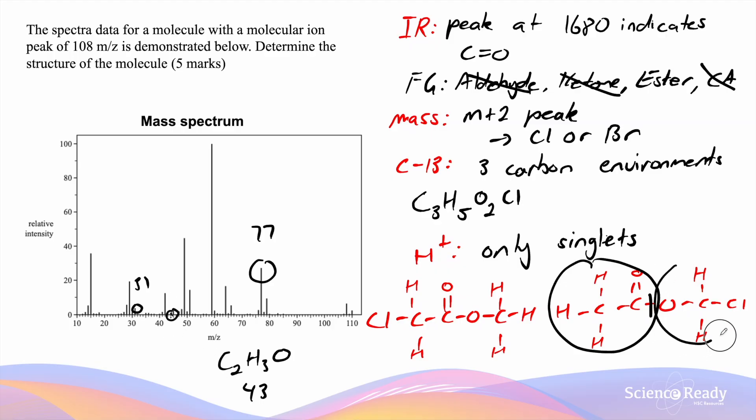The other fragment is CH2OCl. CH2OCl has a molar mass of 65. This signal is also pretty much non-existent on the mass spectrum. Given this evidence, it is most probable that methyl-chloroethanoate is going to be our molecule of choice.